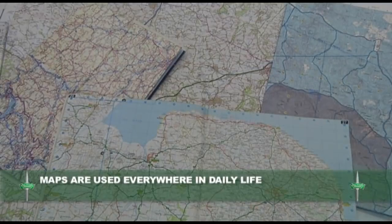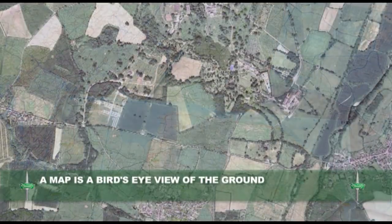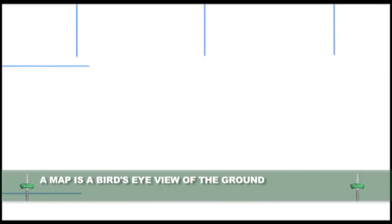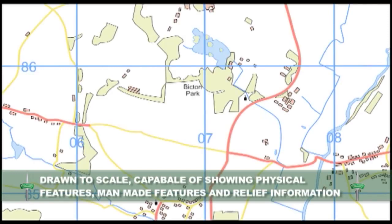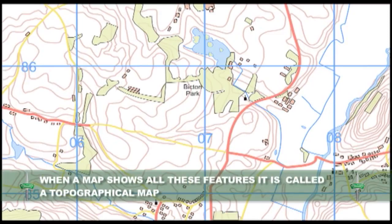Maps are used everywhere in daily life. But what is a map? A map is a bird's eye view of the ground, drawn to scale, capable of showing physical features, man-made features, and relief information. When a map shows all of these features, it is known as a topographical map.